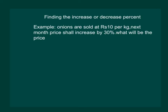For better understanding, let us take an example. Say onions are sold at rupees 10 per kg, and from next month the price shall increase by 30%. Then what will be the price next month? From the question we understand that there will be a 30% rise in price next month, so let us calculate.